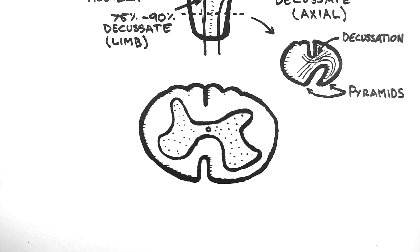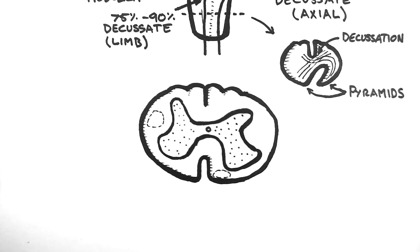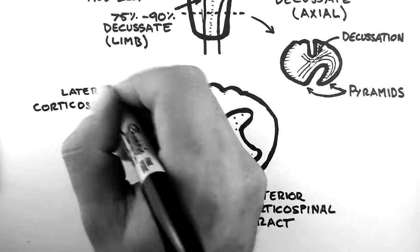After leaving the brain stem, the fibres run down through the two corticospinal tracts that we saw in the first video in the series. These are the anterior corticospinal tract and the lateral corticospinal tract.